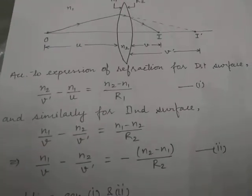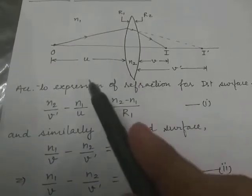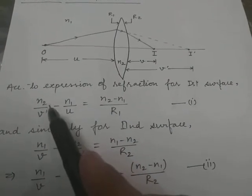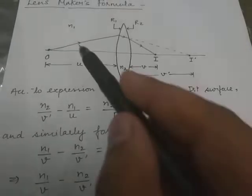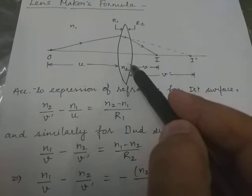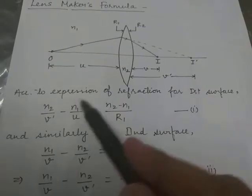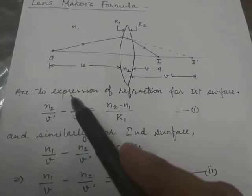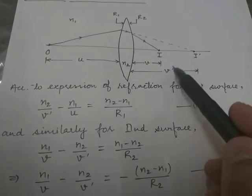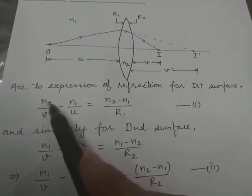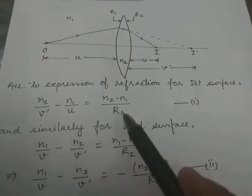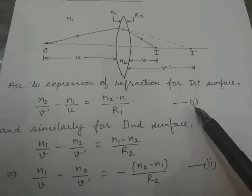Let's start with the derivation. According to the expression of refraction for the first surface, since light rays are traveling from N1 to N2, we can write: N2/V' minus N1/U equals (N2 minus N1)/R1. Here the image formed is I', so its distance is V'. Let this be equation number one.